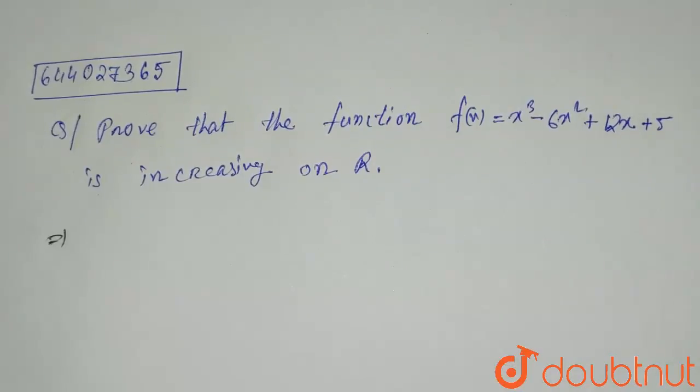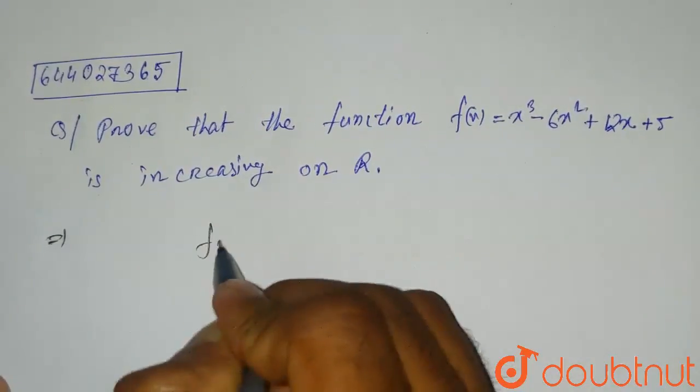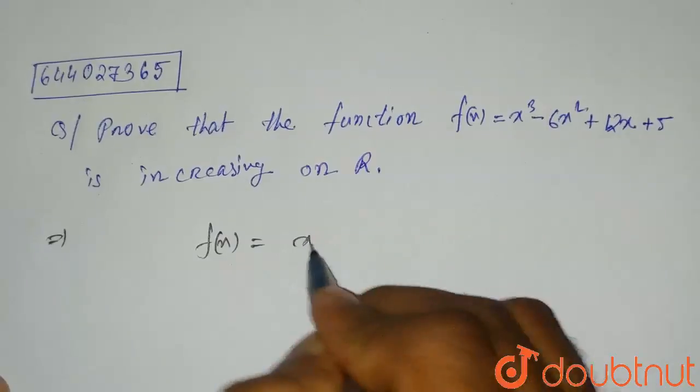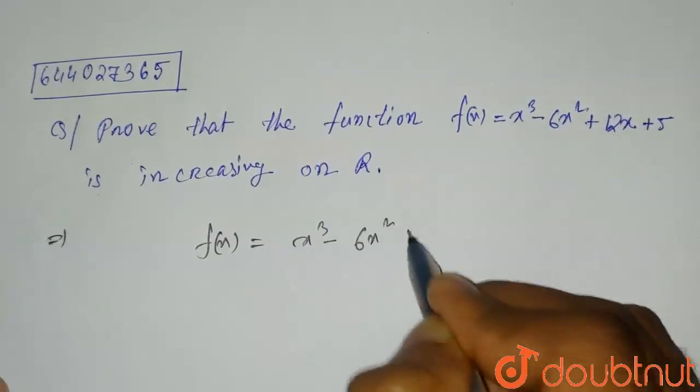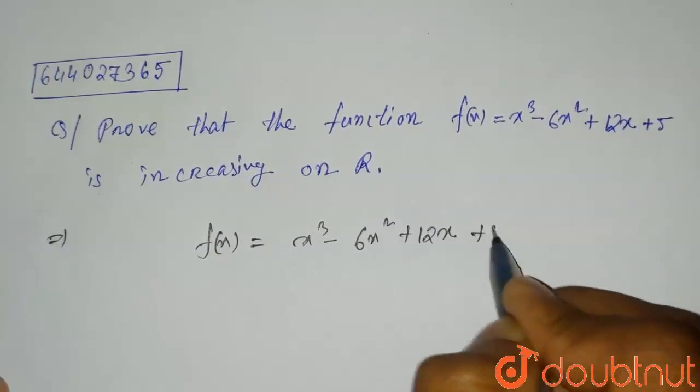If it is less than 0, then it is decreasing. So let's first write the function: f(x) = x³ - 6x² + 12x + 5.